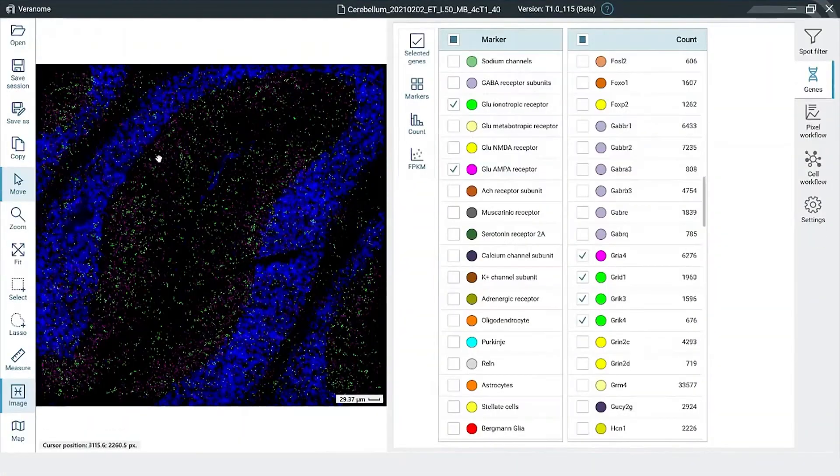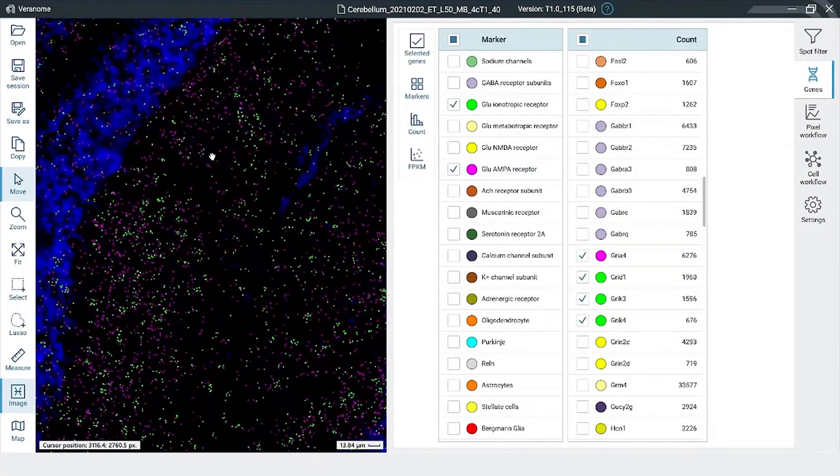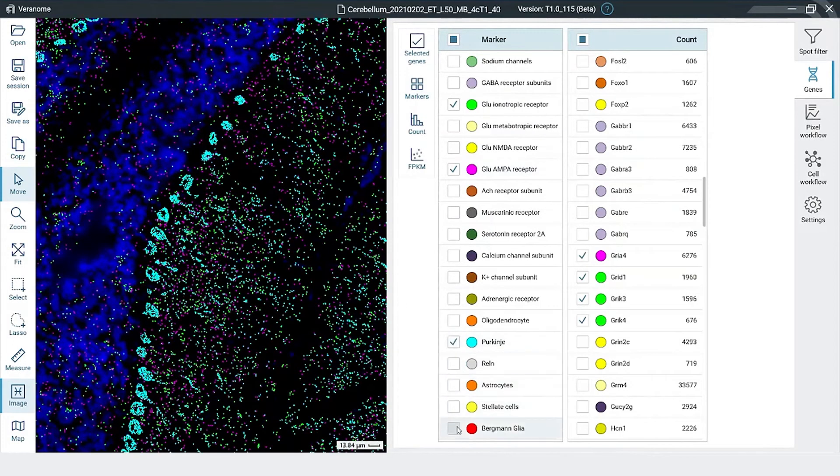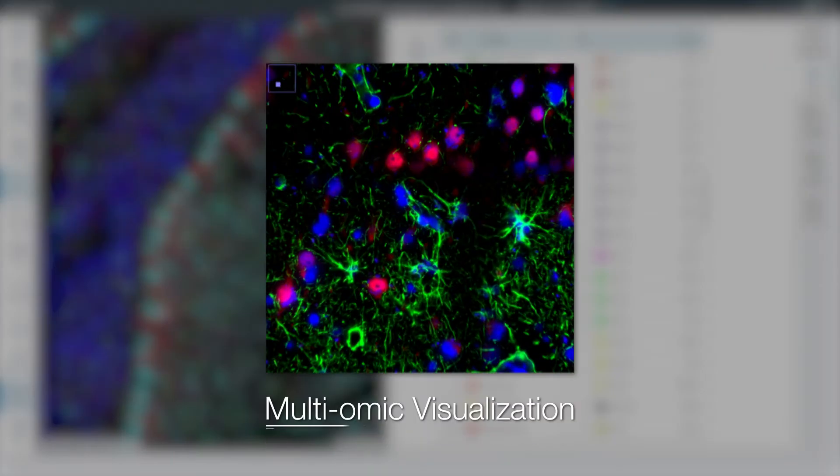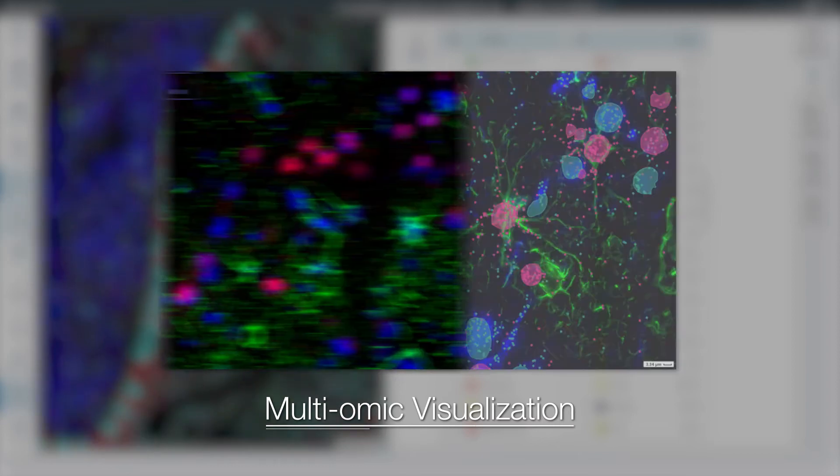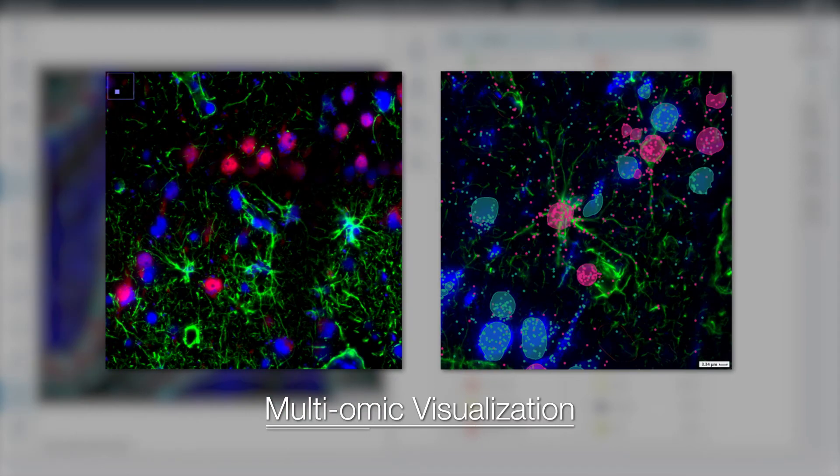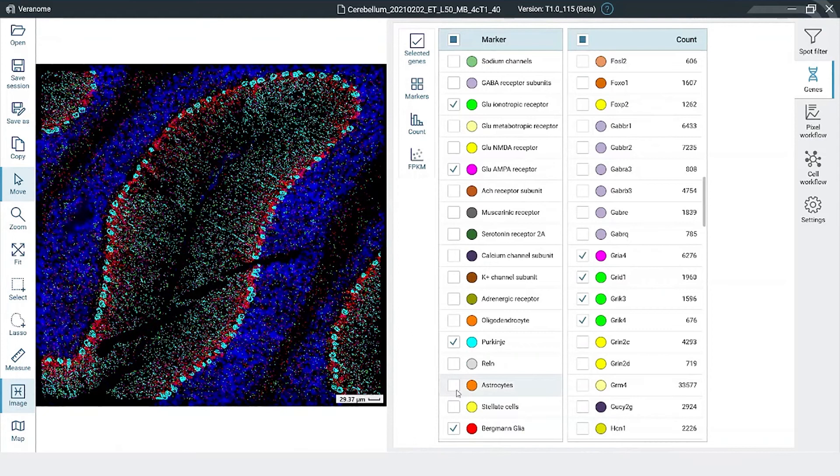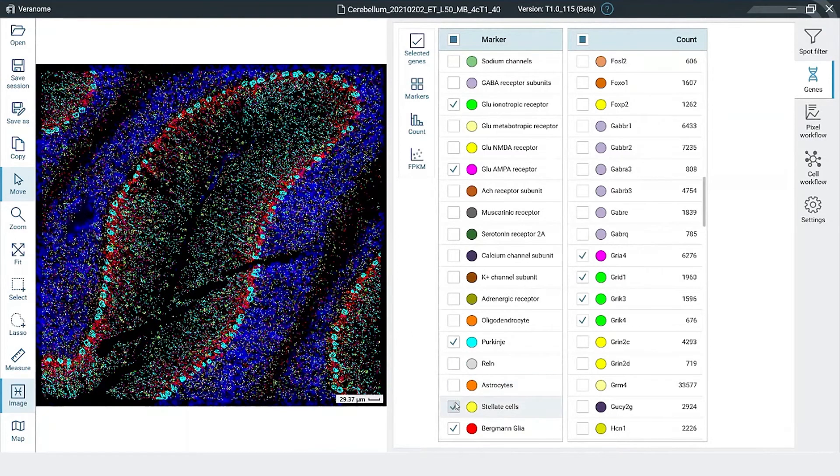The raw images from the system are converted to RNA spots by the built-in software. These decoded RNA spots can be visualized as cell type clusters together with immunofluorescent stains and merged for multi-yomic analysis in Veranome's analytics software.